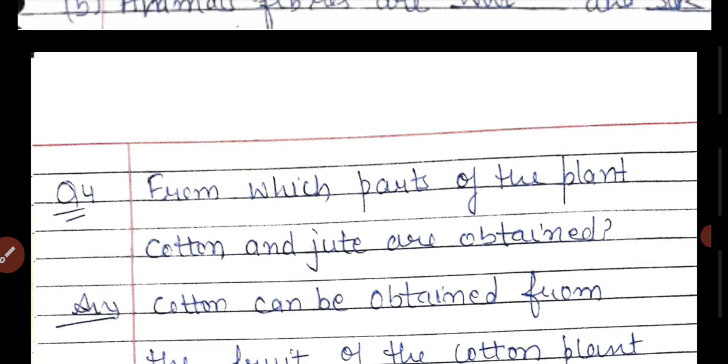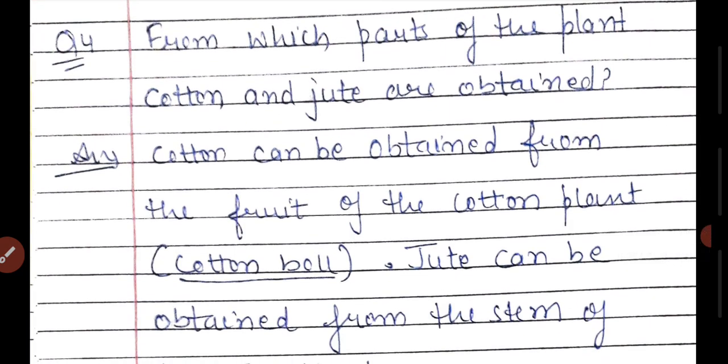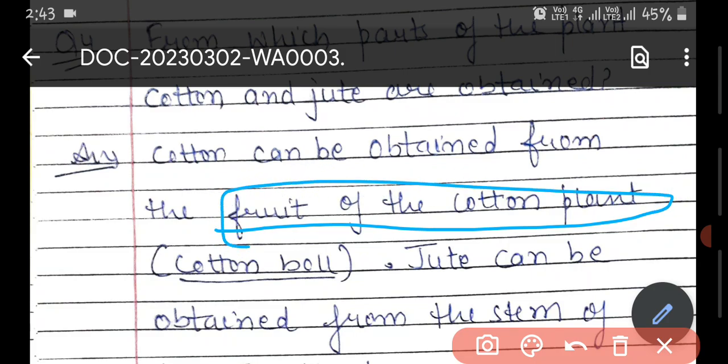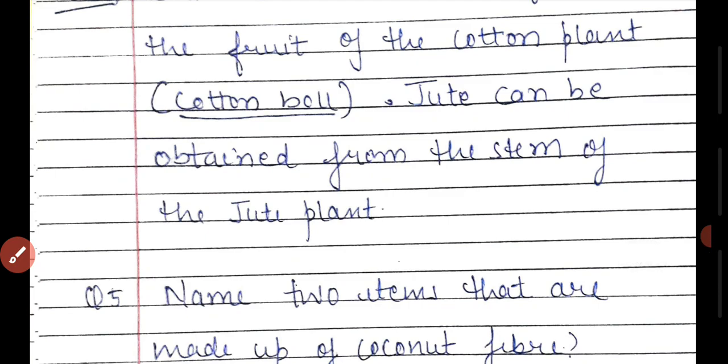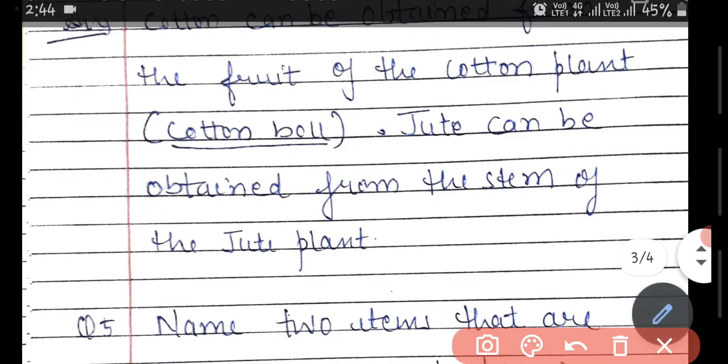From which part of the plant are cotton and jute obtained? Cotton is obtained from the fruit—when the fruit of the cotton plant bursts, the seeds come out and cotton fibers are separated through the ginning process. Jute is obtained from the stem. When the jute plant reaches the flowering stage and is harvested, the stems are soaked in water to separate the fibers from the stem.